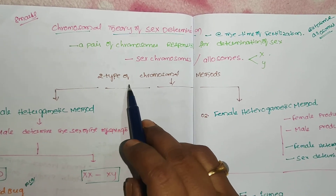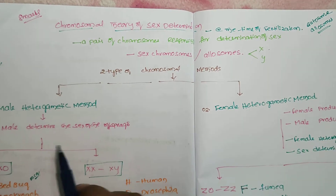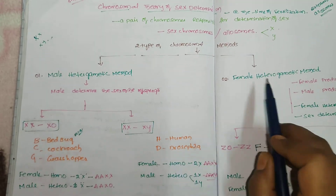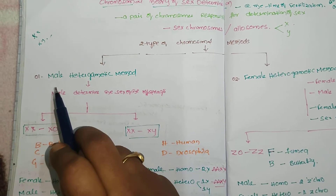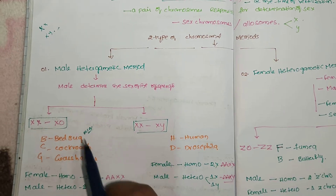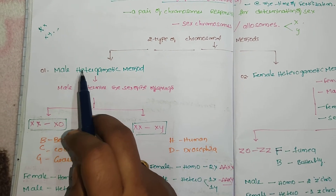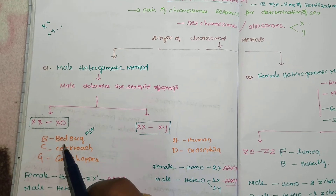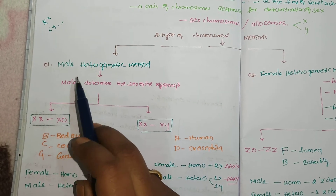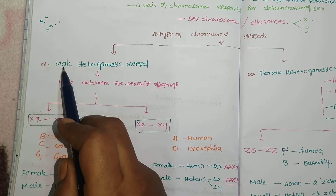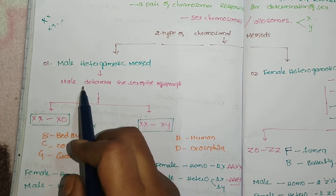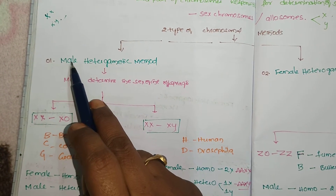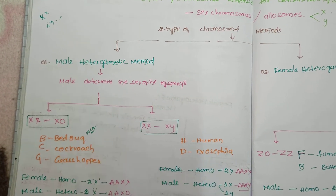We have two types of chromosomal methods: the male heterogametic method and the female heterogametic method. The name itself indicates that in male heterogametic, the male produces two different types of gamete karyotypes. So the heterogametic condition is in the male, and therefore the male determines the sex of the offspring.